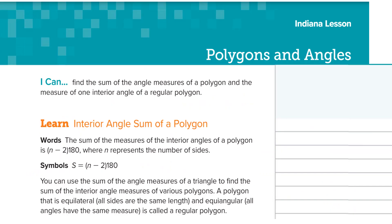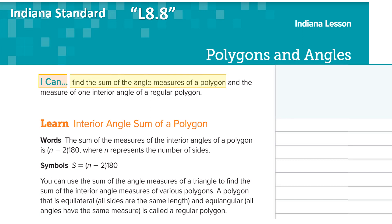Let's look at what our objective of lesson 8.8 is. This is an Indiana standard. Basically, we want to be able to find the measurement or the sum of the interior and exterior angles of a polygon. We have a formula for the interior, and we have a rule for the exterior.